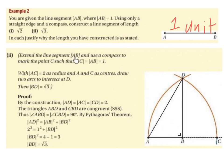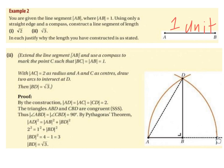We extend the line segment AB and use a compass to mark the point C, such that BC equals AB, which equals 1. So starting with line segment AB, we extend the line to the right. If AB was, say, 5 cm on your page, you draw another 5 cm to the right of B. We are calling each section 1 unit, giving us point C.